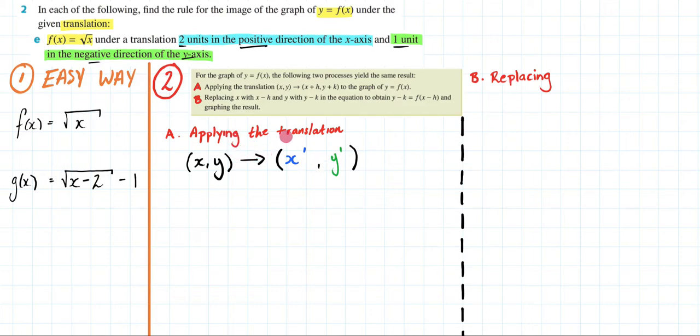We're first going to be applying our translation. So here we have (x,y) and this represents our original point. It actually represents every point on our original graph, our square root of x graph. We are then going to apply our translations and arrive at a new point and this new point is going to represent every point on our new graph.